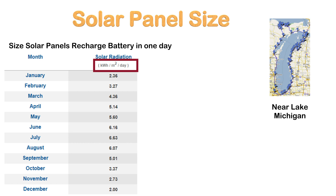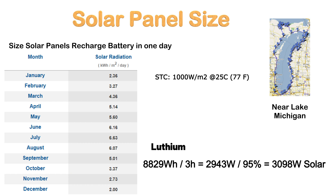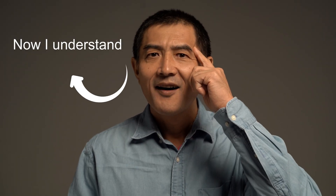Sun hours measure the amount of kilowatt-hours per square meter per day. Solar panels are rated at STC — standard test conditions — at an irradiance of 1,000 watts per square meter, so we can use this for our calculation without an additional efficiency factor; all these numbers are monthly averages. To charge the LFP battery from 0 to 100%: 8,829 watt-hours ÷ 3 sun hours = 2,943 watts. Dividing by the charge controller efficiency of 95% gives us 3,098 watts, so approximately 4,000 watts of solar panels.